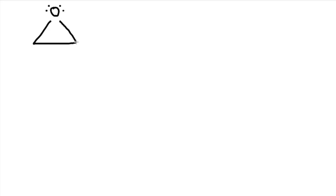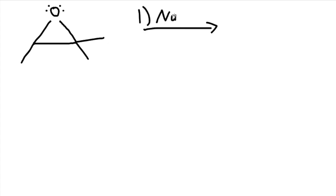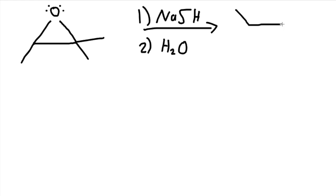Let's do another example. We have an epoxide with two methyls on the right and one methyl on the left. We use NaSH with water. This is a base-catalyzed ring opening, so it attacks the carbon with the least amount of substituents — that means on the left we put the SH. We can also show the stereochemistry, so there's a wedge and a dash in our product.